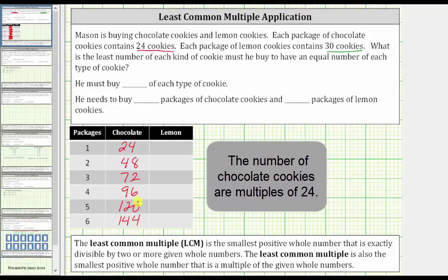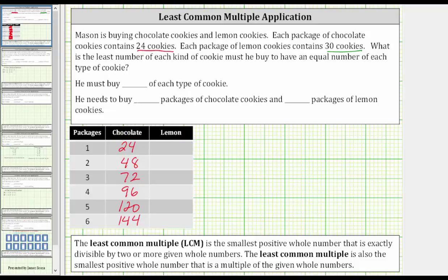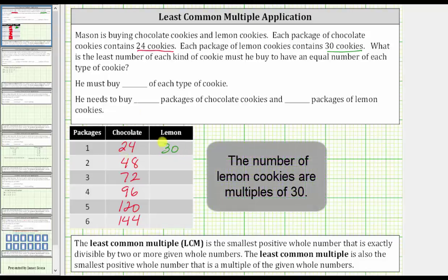Now let's record the number of lemon cookies based upon the number of packages. Remember, there are 30 cookies in each package of lemon cookies. So for one package, there are one times 30, or 30 lemon cookies. For two packages, there are two times 30, or 60 lemon cookies. For three packages, there are three times 30, or 90 lemon cookies.